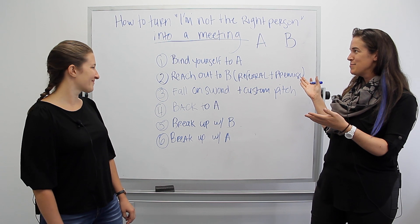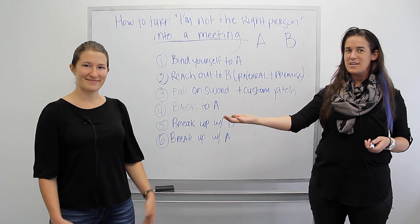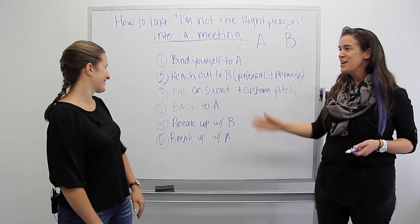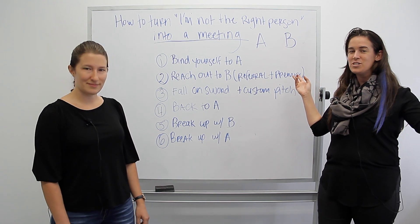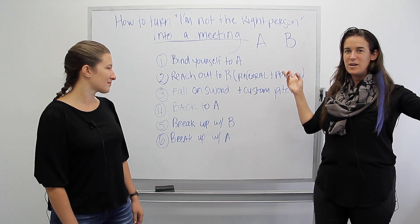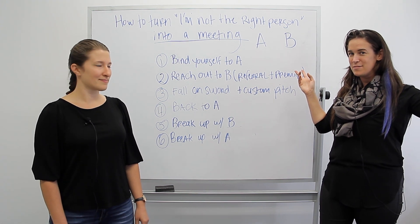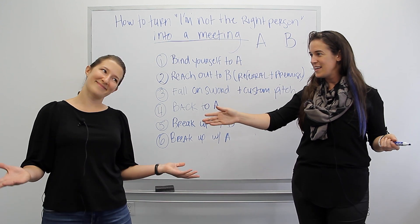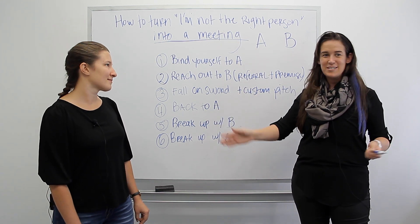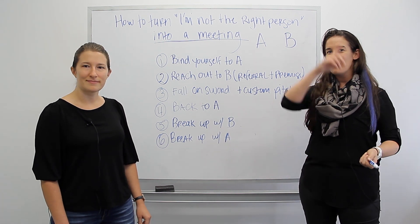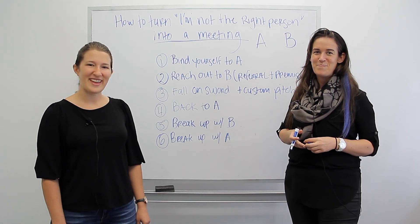So that's it. Those are the six steps. So in review, how to turn I'm not the right person into a meeting is you bind yourself with prospect A by asking them for advice. You reach out to prospect B with context of the referral and then give them a custom pitch. If it doesn't work, you go back to prospect B, fall on the sword, take accountability for the outreach not working and go in with another custom pitch. If that doesn't work, go back to prospect A, give them an update and ask for any advice on what to do next. If that doesn't work, go back to prospect B and break up with them and go back to prospect A and break up with them. So thanks everyone for watching and hope you have a great rest of your day. Thank you.